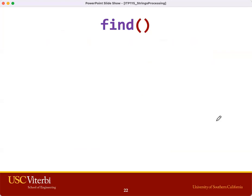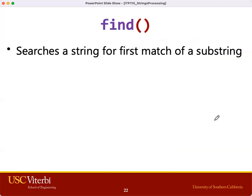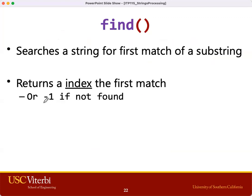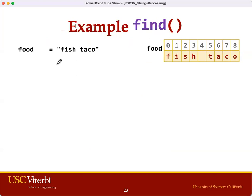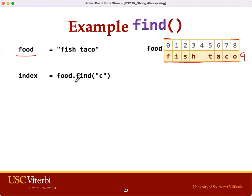The find function returns the index of the first occurrence of whatever we are searching for, and if not found, it returns minus 1. For example, we have a variable 'food' with the value 'fish taco'. This has 9 characters with a valid index from 0 to 8. Executing the find function when searching for the character 'c' should return the index of its first occurrence, so the index variable should be 7.